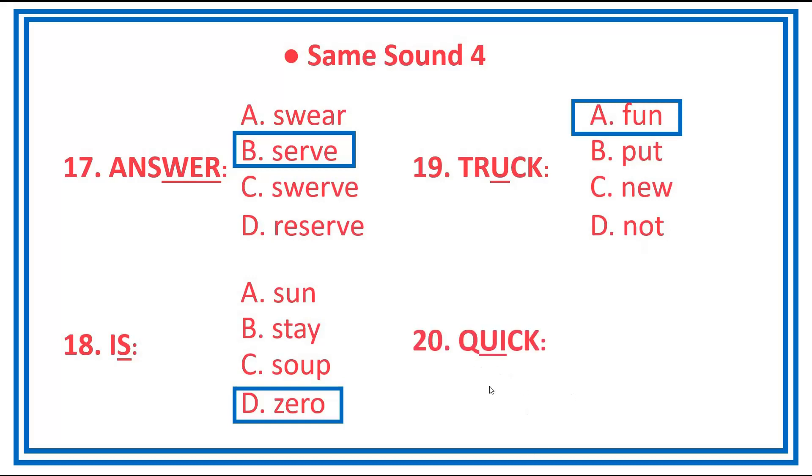Number 20. Last item. Quick. A, win. B, weak. C, cut. D, cute. Answer is letter A, win.